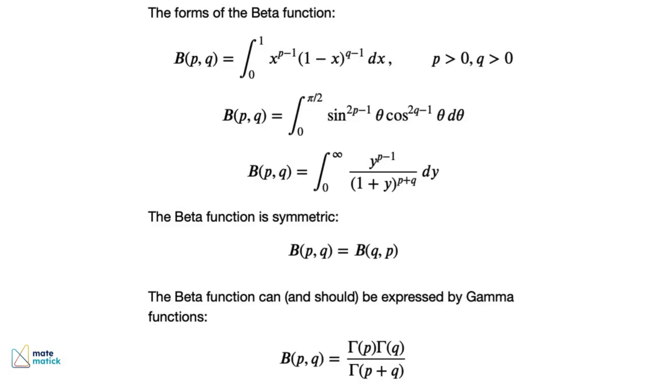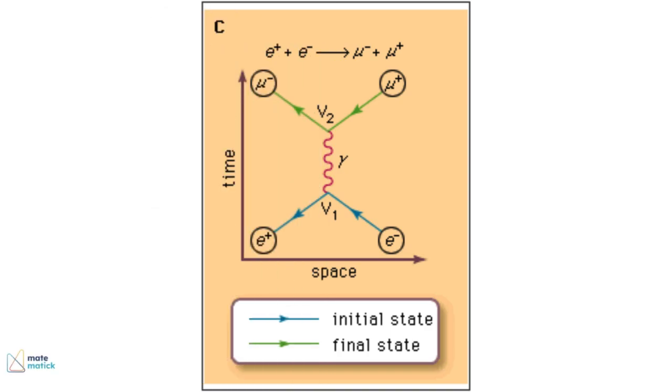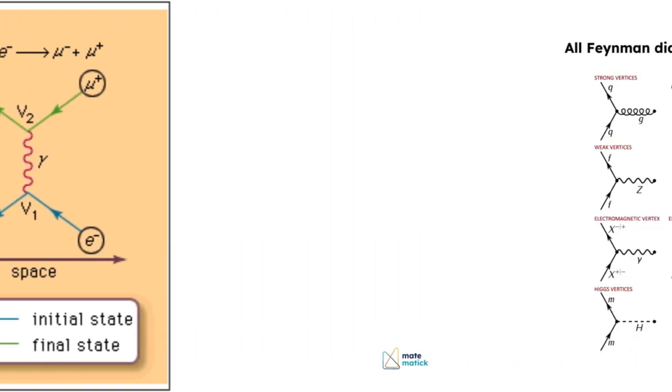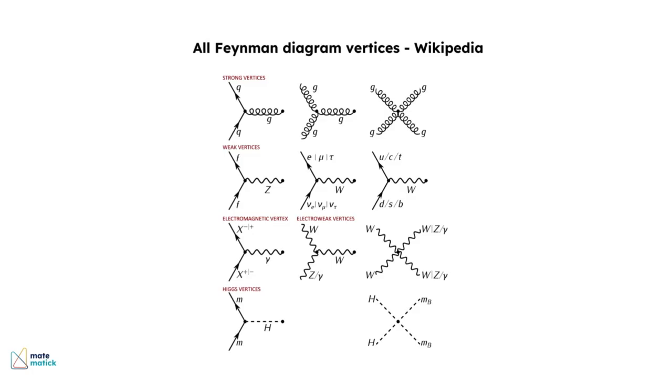They used tools like the Euler-beta function and Feynman diagrams to model these complex interactions. The Feynman diagram helps physicists visualize and calculate the energy exchange during particle interactions. By combining this with the Euler-beta function, they created a more efficient model of particle collisions.